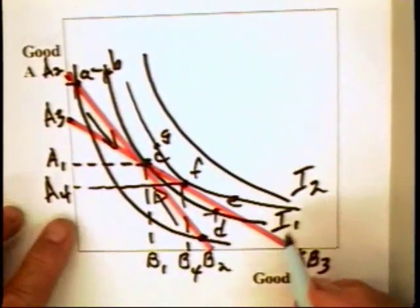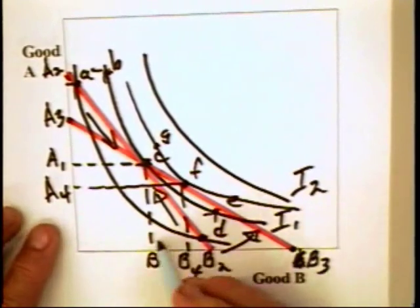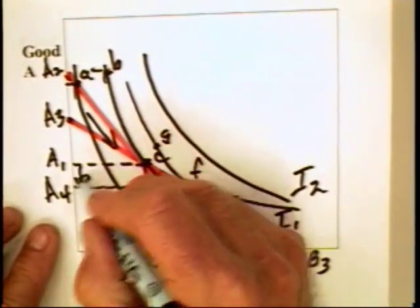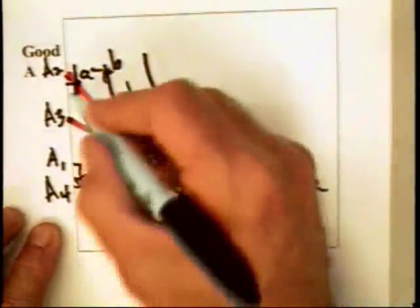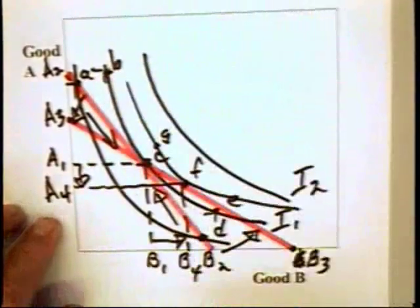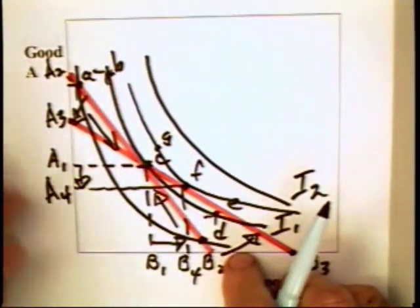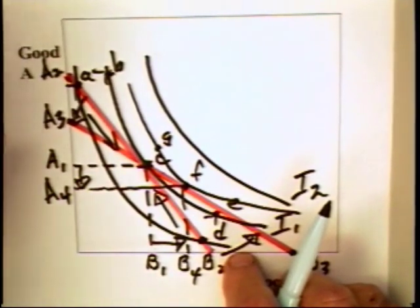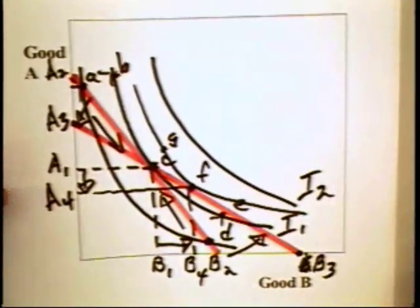The moral of the story is: when the price of B goes down, there is more B being bought. When the price of A goes up, there is less A being bought. What we have demonstrated here is the law of demand.